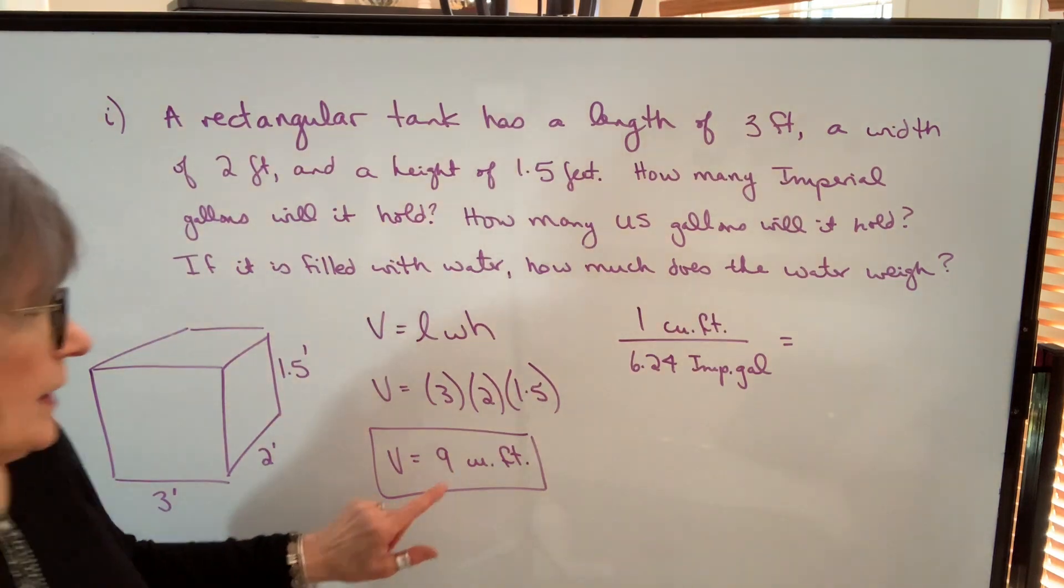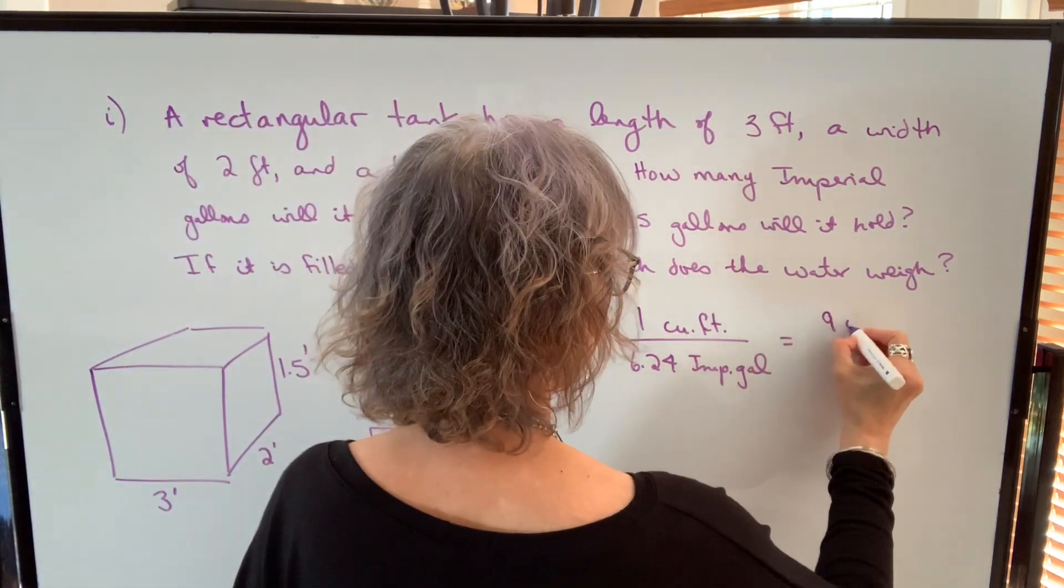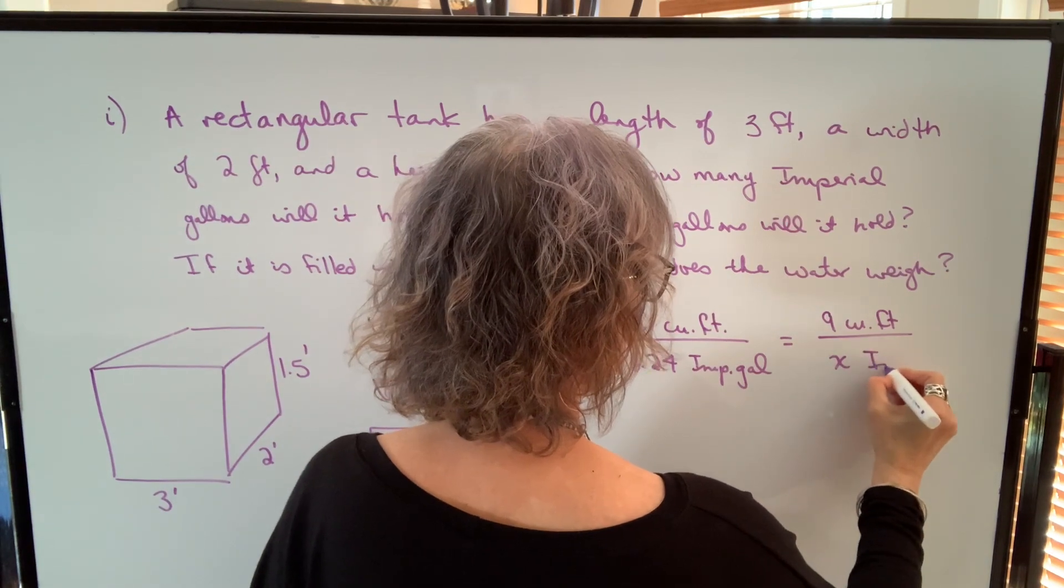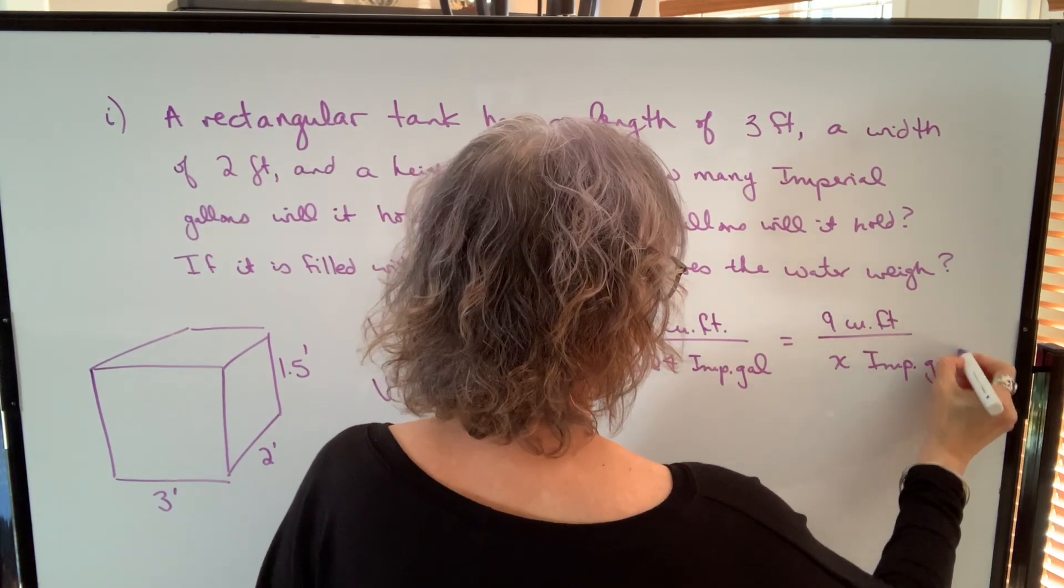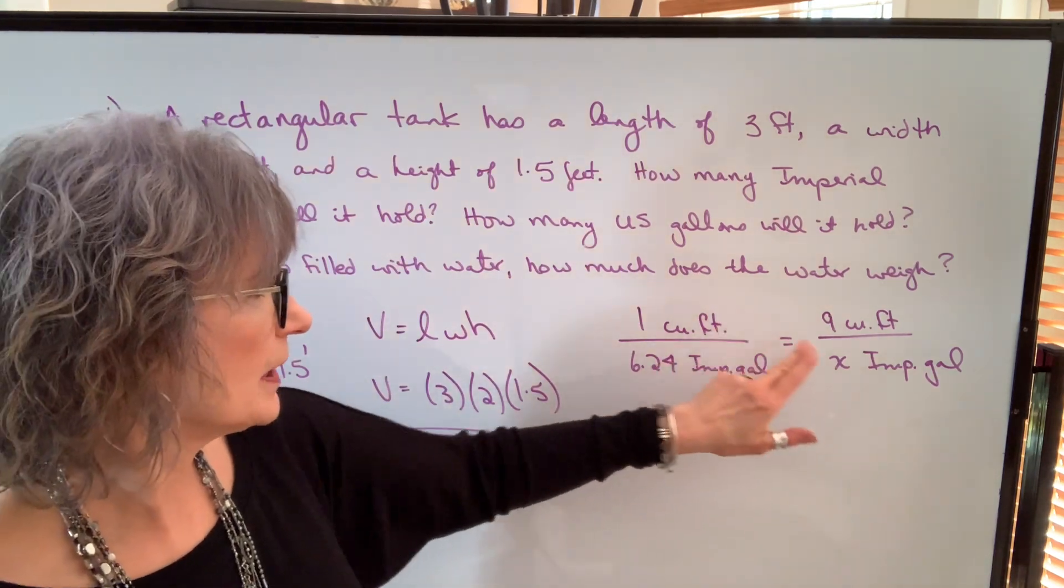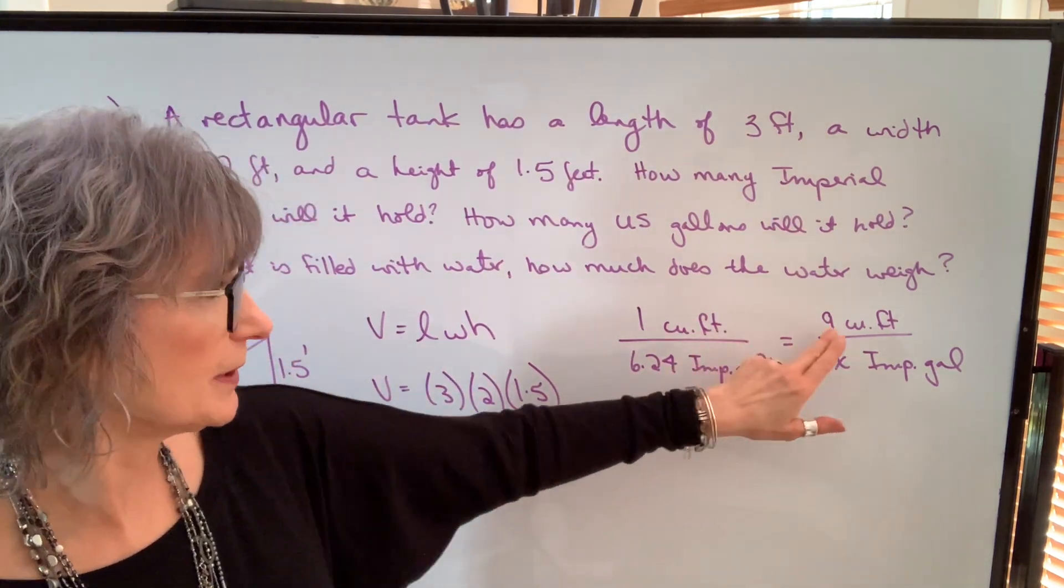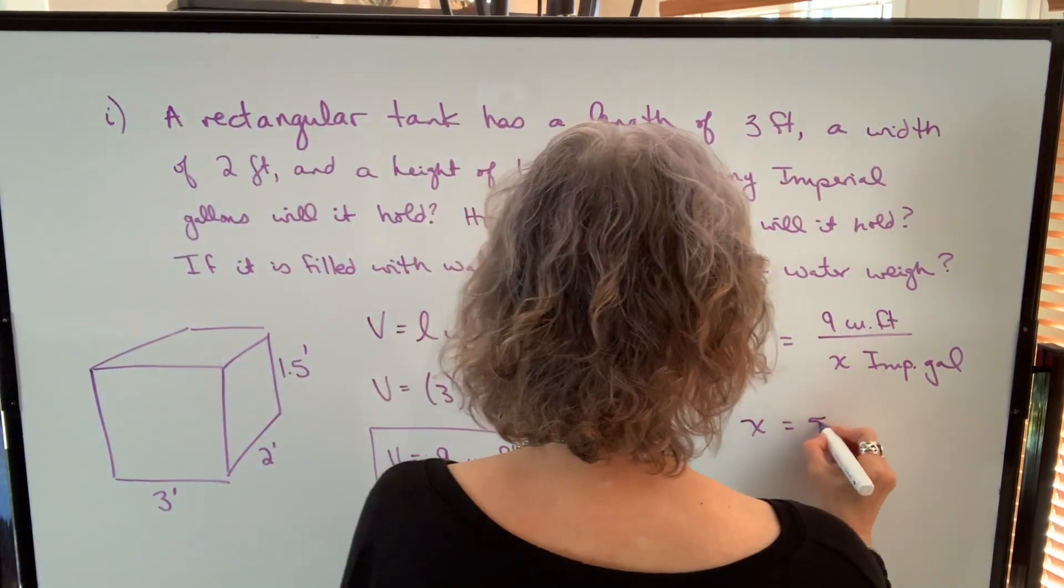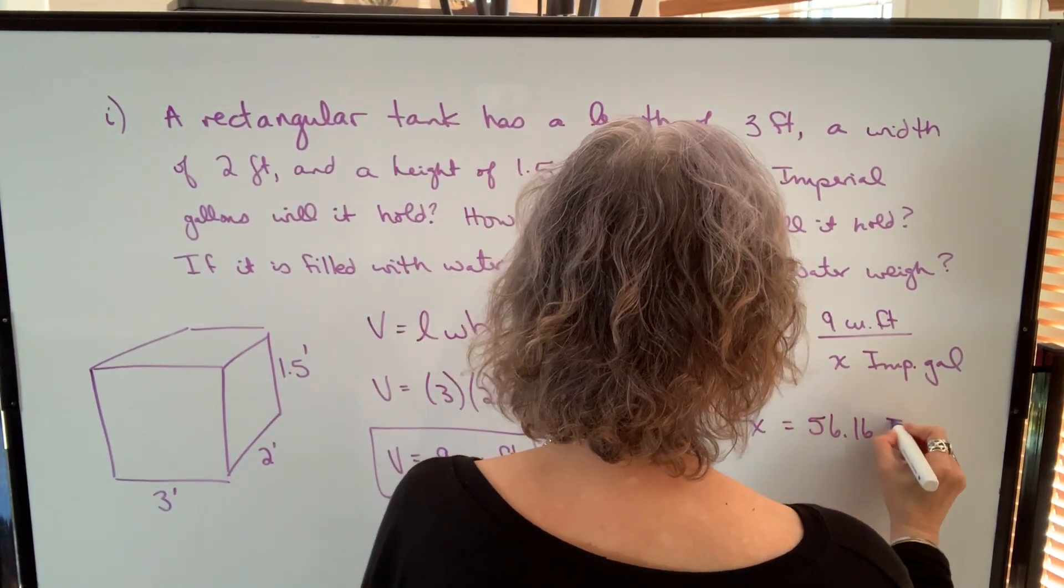Therefore, if I have 9 cubic feet of volume, I should be able to find out how many Imperial gallons I have. I'm going to cross multiply. So 1 times x will equal 6.24 times 9. x will be equal to 56.16 Imperial gallons.